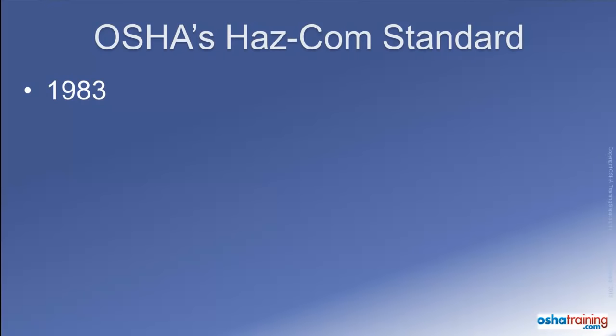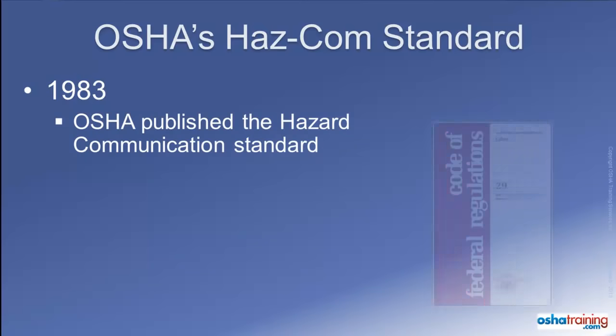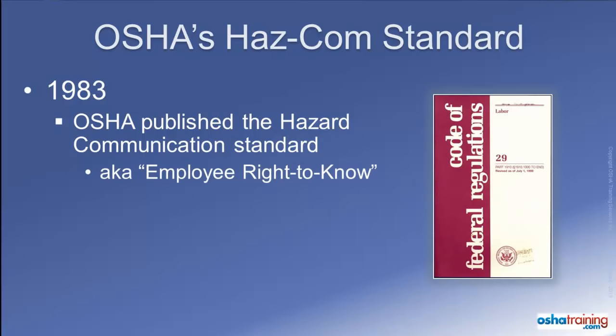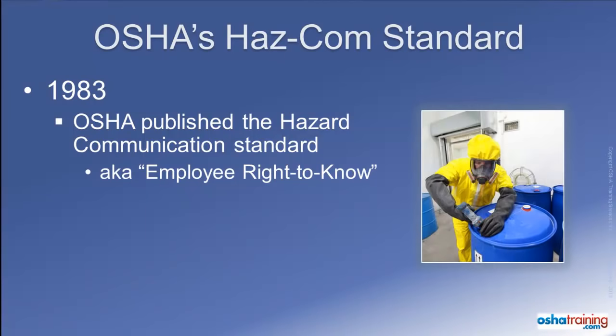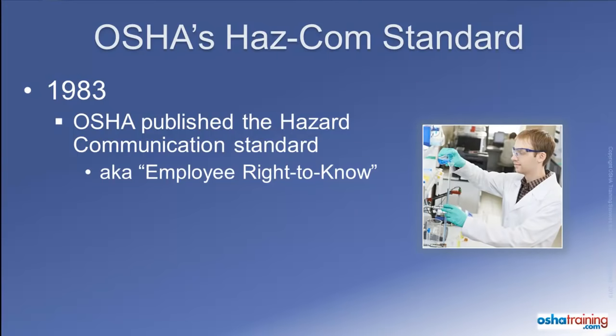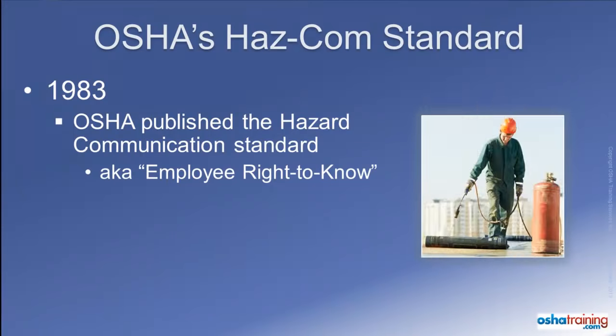In 1983, the Occupational Safety and Health Administration, or OSHA, published their hazard communication standard. This important standard was often referred to as the Employee Right to Know standard because it was developed to ensure that workers had access to information and training about the hazards of the chemicals and products they were exposed to at work.